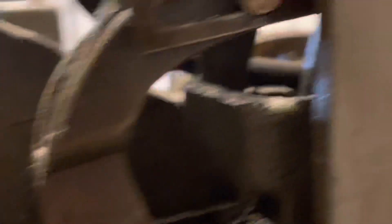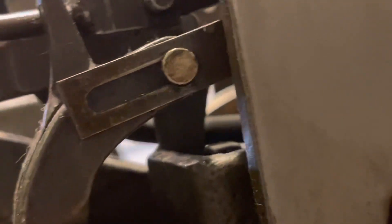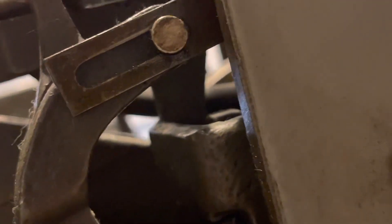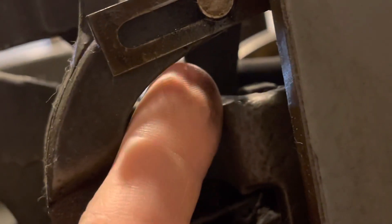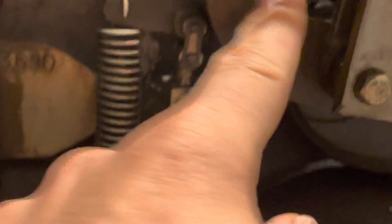Now here's the clutch arm from the other side. If I can get a shot in there of it. There's the stop arm right through there. And it's kind of tied into the dashpot right here.